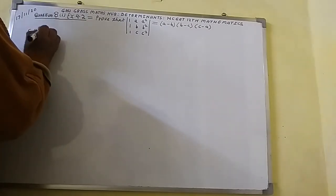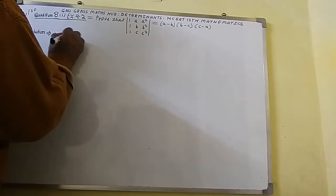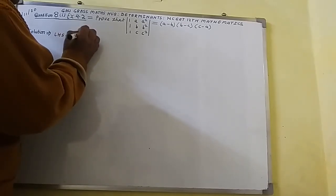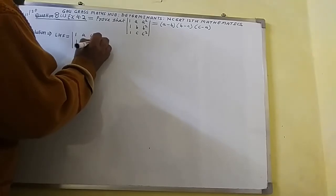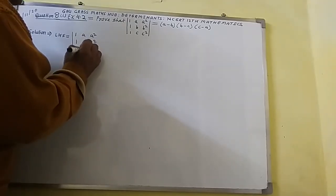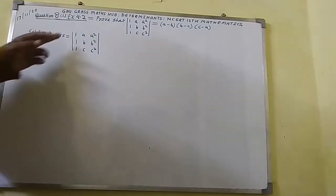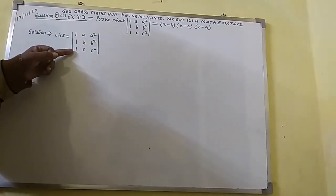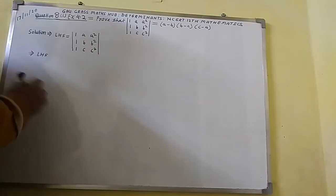Here I shall write the solution. LHS equals the determinant with first row [1, A, A²], second row [1, B, B²], and third row [1, C, C²]. This is the LHS we need to work with.